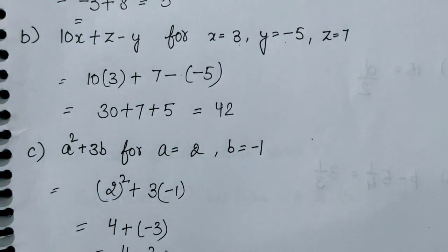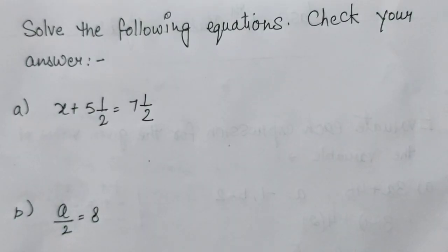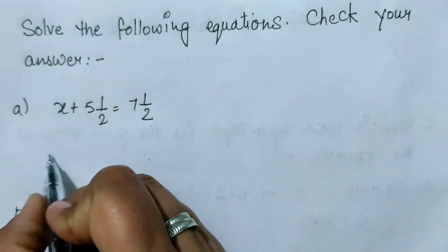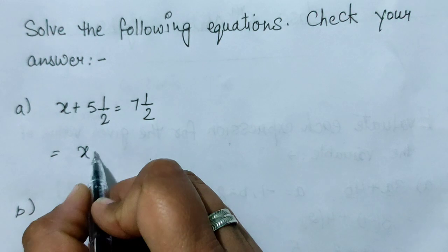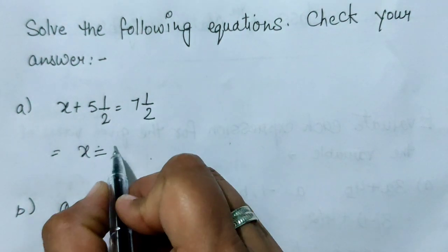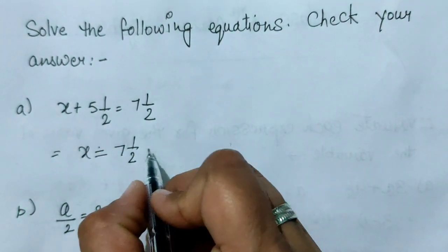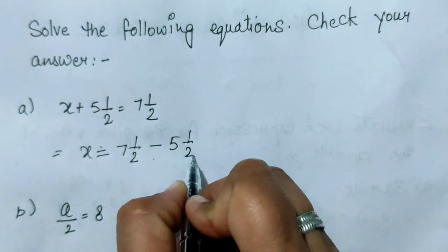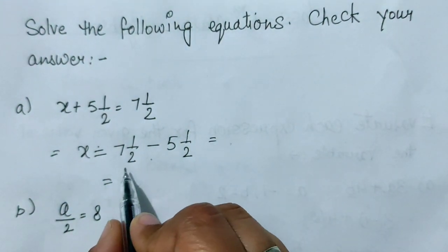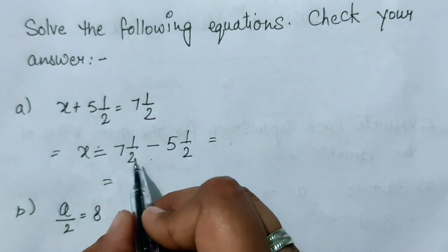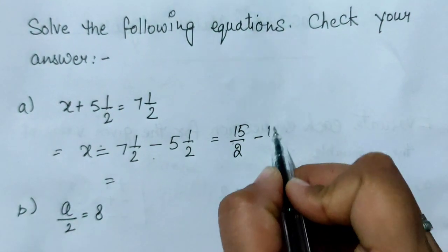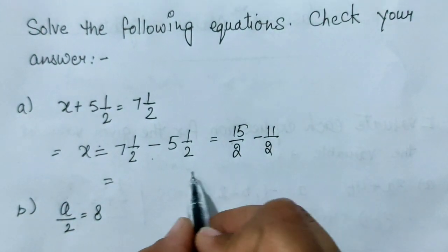Solve the following equation and check your answer। यहाँ पर X है, plus में 5 into 1½ और इधर 7 into 1½। Equal के इधर जाकर minus हो जाएगा। आप इसको direct घटा सकते हो, या LCM लेकर solve कर सकते हो। लेकिन क्योंकि यह mixed fraction है, इसको पहले improper में convert कर लेंगे। यह हो जाएगा 15 by 2 minus 11 by 2।